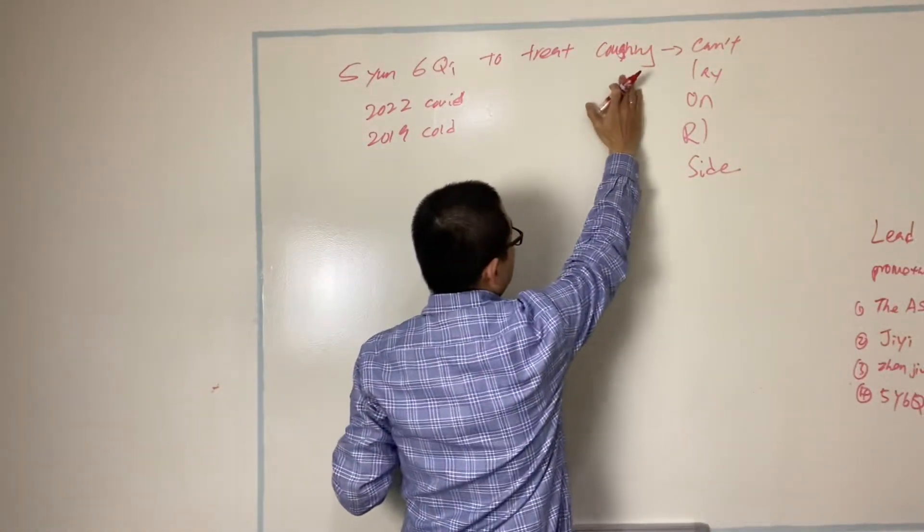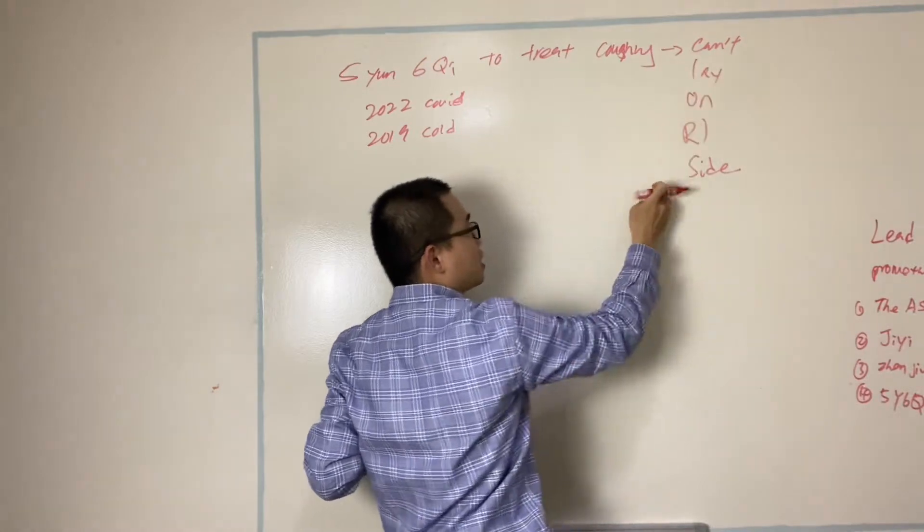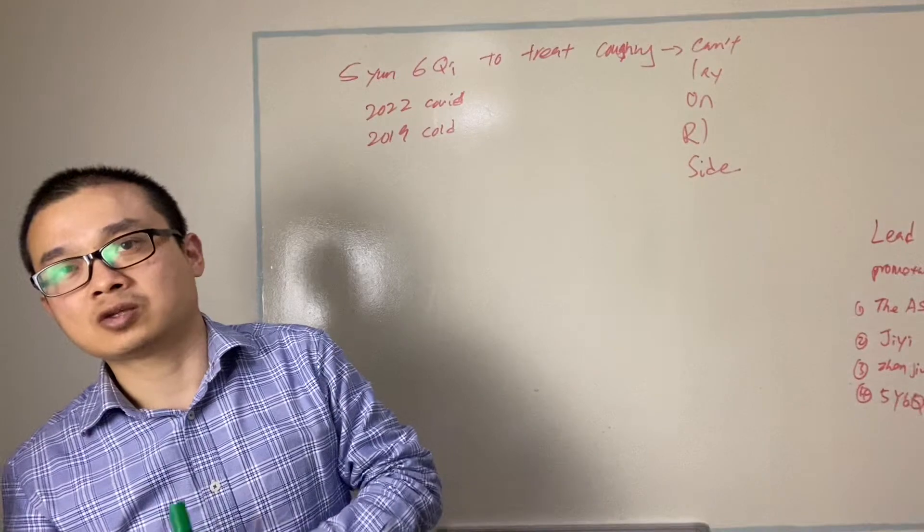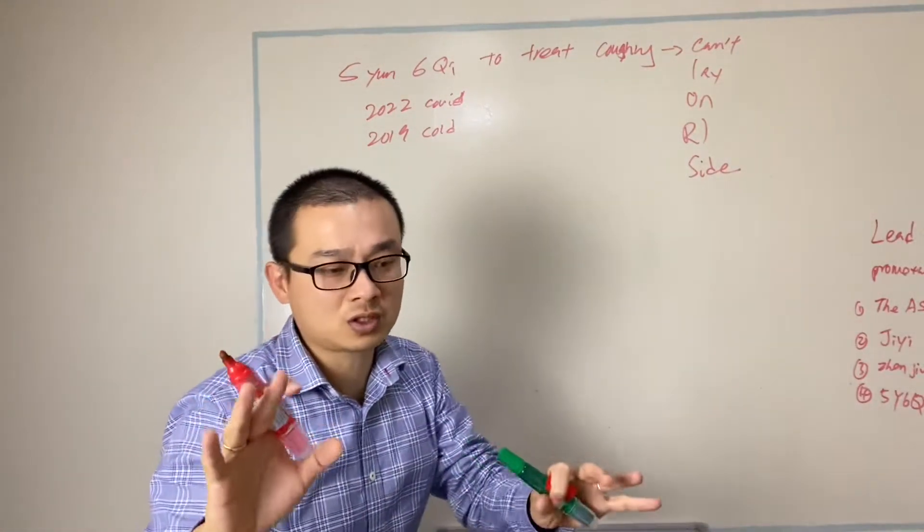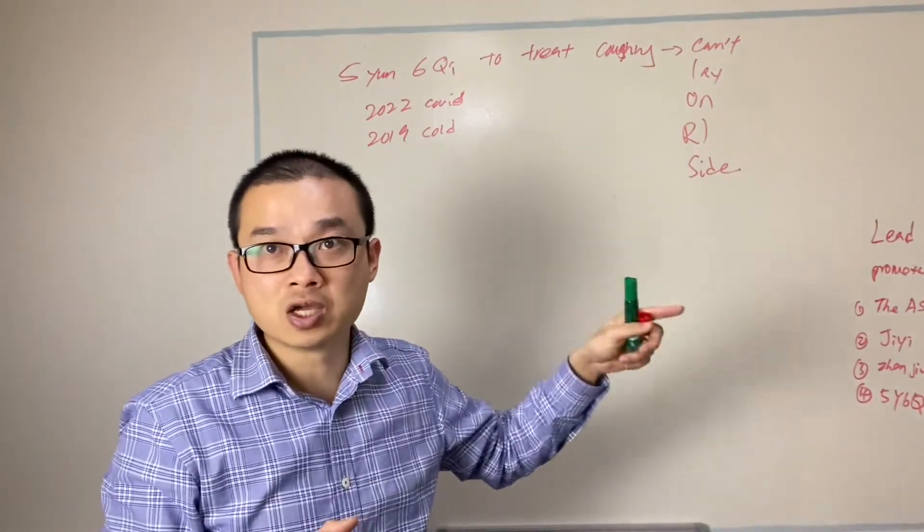Then developed to coughing and everything's fine afterward but this one didn't remain. She can't, ever since, she can't lay on her right side to sleep. As you lay on the right side, a few seconds, causes her coughing. So this symptom, I want to share with you, this symptom in Shang Han Lun Jin Gui Yao Lue called Liu Yin.